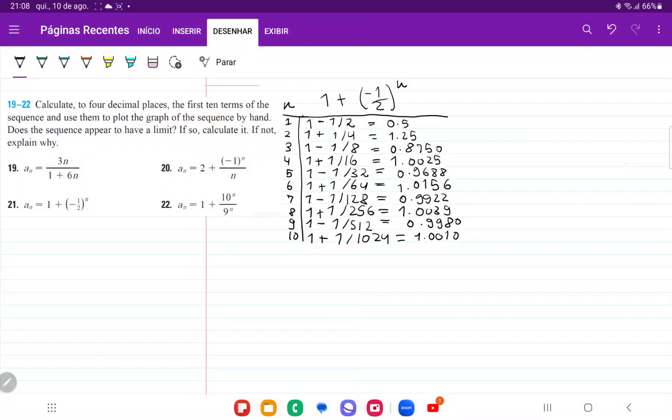So for number 21, they want us to take this sequence here, a_n is equal to 1 plus minus 1 half to the power of n, and they want us to calculate to four decimal places the first 10 terms.